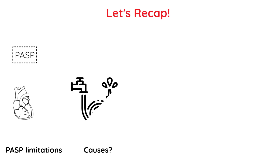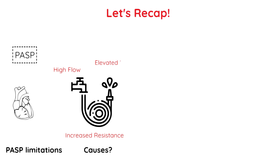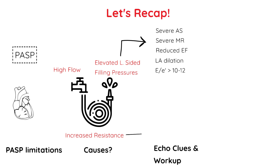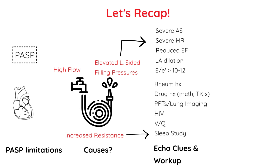What causes elevated pulmonary artery pressures? Remember the garden hose analogy and ask: is there high flow? Is there high vascular resistance? Or are the left-sided heart pressures up? How can the echo help work up pulmonary hypertension? Elevated left-sided filling pressures is a very common cause. Start by looking for obvious causes of systolic dysfunction, like bad valvular disease or a low ejection fraction, and then for more subtle signs of diastolic dysfunction, like an enlarged left atrium or E to E' prime ratio greater than 10 to 12. If you suspect increased pulmonary vascular resistance, take a thorough rheumatologic and drug exposure history, including methamphetamine use and tyrosine kinase inhibitors, check old PFTs and lung imaging, screen for HIV, and consider a VQ scan for CTEPH.